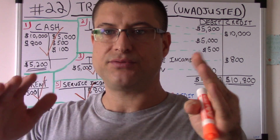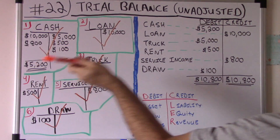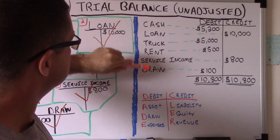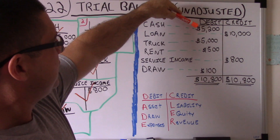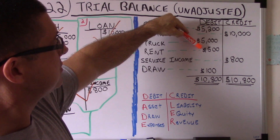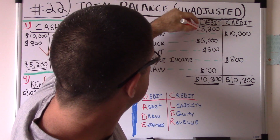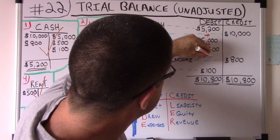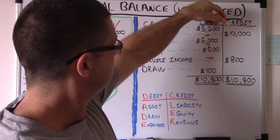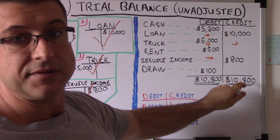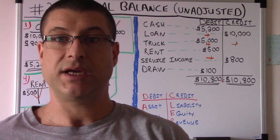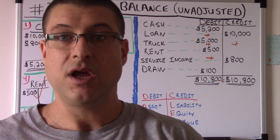Now let's see if we've transferred correctly — from journal entry to T-account to trial balance. You add up all the debits and all the credits. Debits: $5,200 + $5,000 = $10,200 + $500 = $10,700 + $100 = $10,800. Credits: $10,000 + $800 = $10,800. They equal! We've done everything correctly, no mistakes. That right there is an unadjusted trial balance.